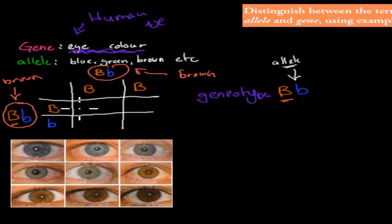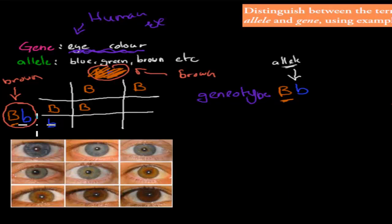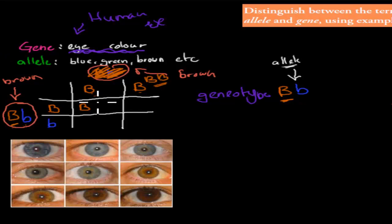Now when they would crossbreed — actually, a quick correction: I said one had two dominant alleles so that one had two brown alleles, and the other one had one brown and one blue allele. So if we were to cross those, we would have one brown and one brown from here.